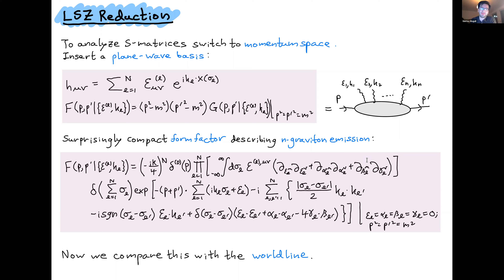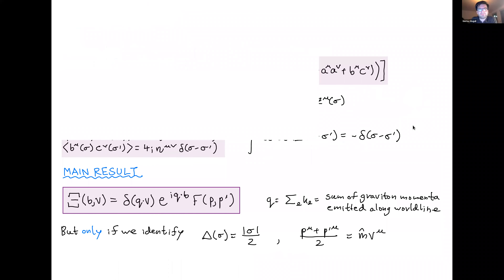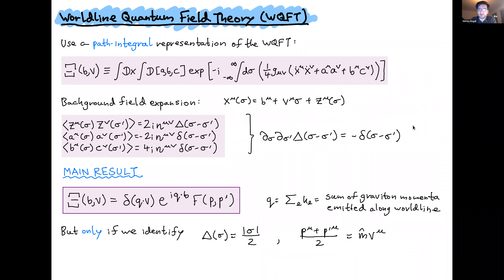Now we've spent time thinking about the QFT side of the story. Now it's time to hop over and think about the worldline side so we can do a comparison. This is the point where we introduce the worldline QFT. The worldline QFT is extremely similar to what Gregor was talking about, but as he said, what we do is we promote the position of our black hole X to be a propagating degree of freedom. We also have to include the ghosts.